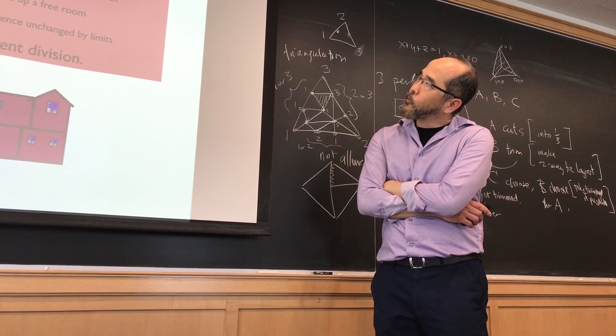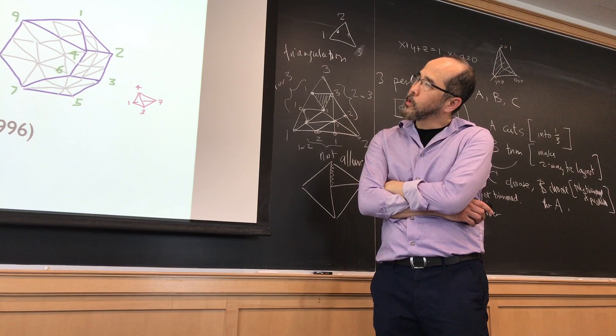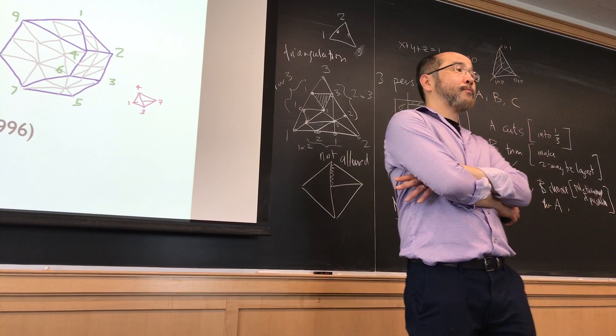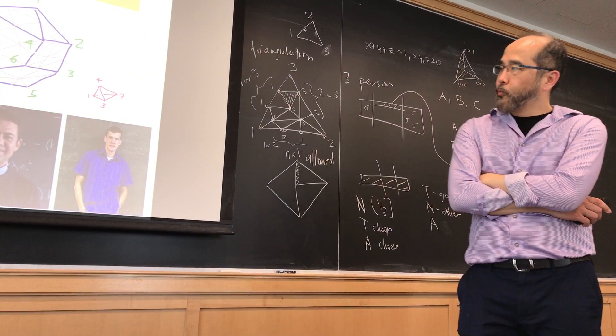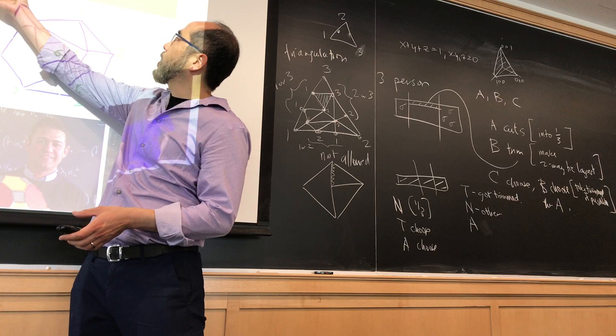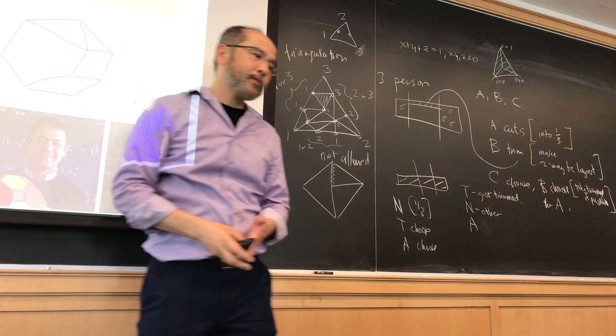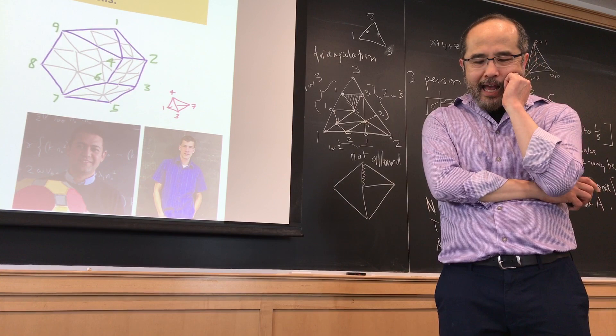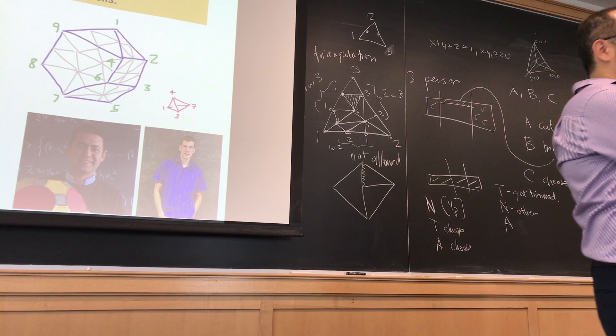A few extensions worth mentioning. A student did a senior thesis trying to prove a polytopal version of Sperner's Lemma with similar labeling conditions. Together with Jesus de Loera, a professor at UC Davis, we proved a version of Sperner's Lemma for polytopes: not only do you get a certain number of special simplices, but the count is related to the dimension and number of vertices of the polytope. As an exercise: use this to prove the Hex theorem — you can do it.